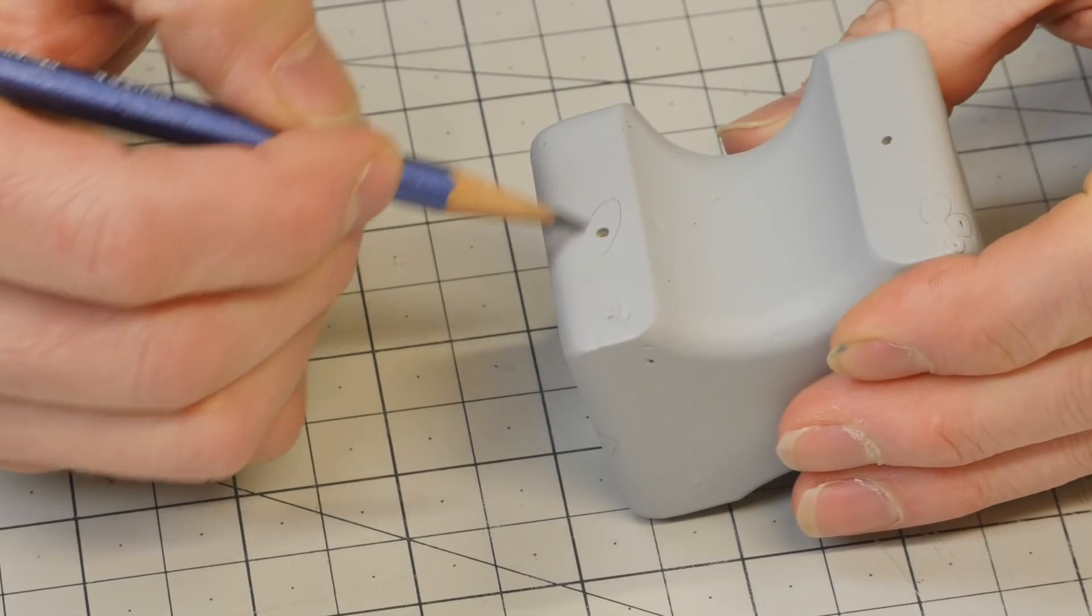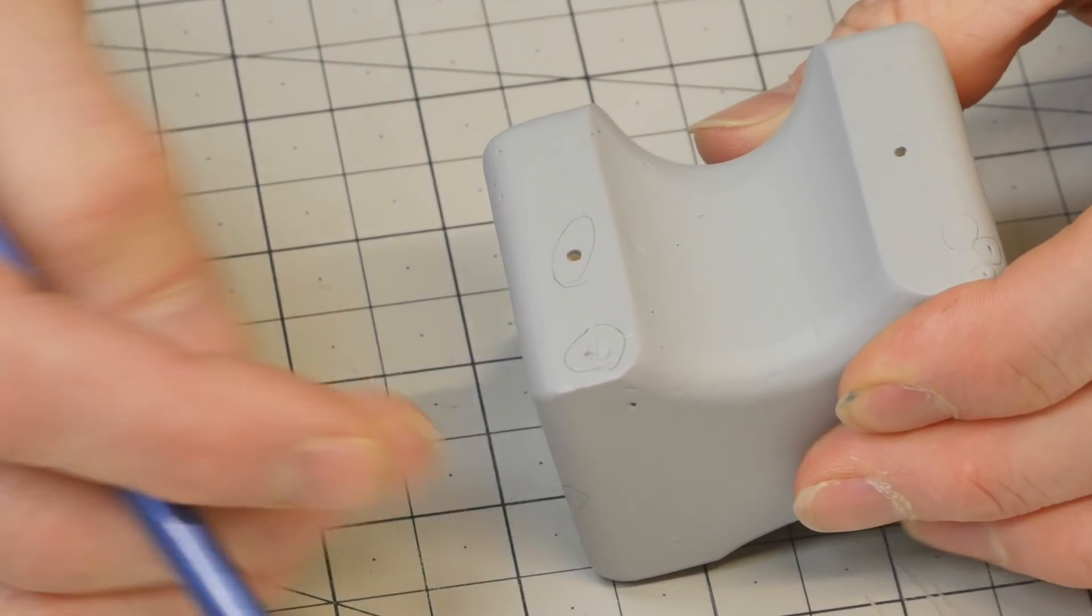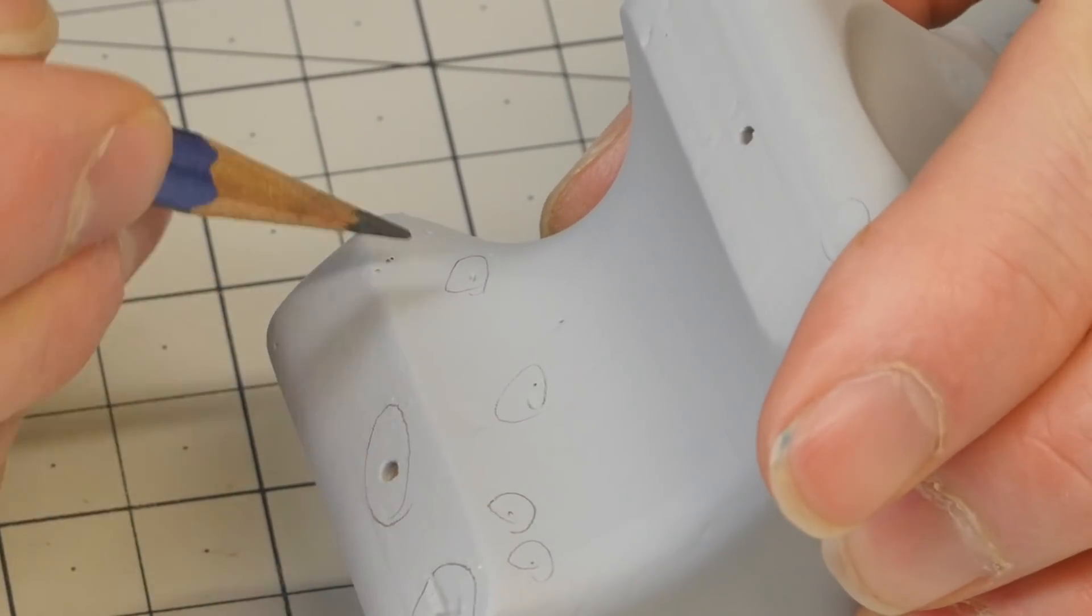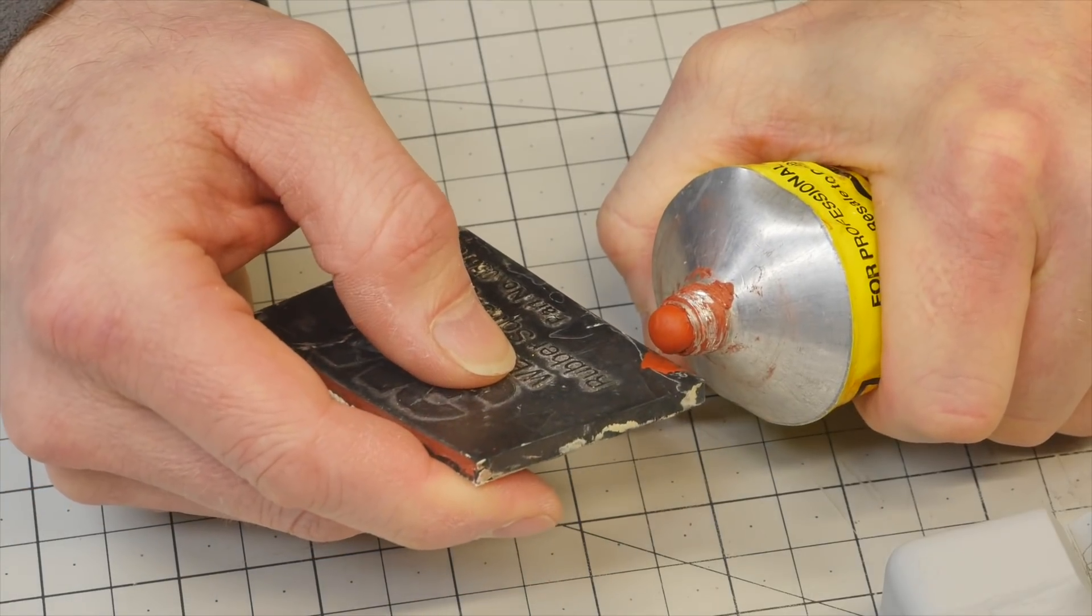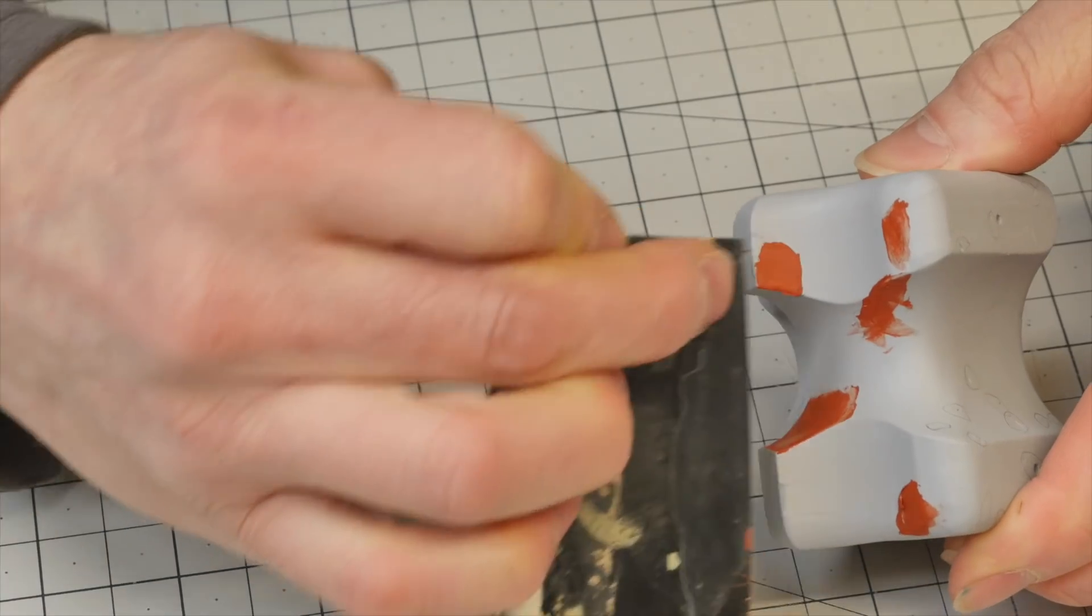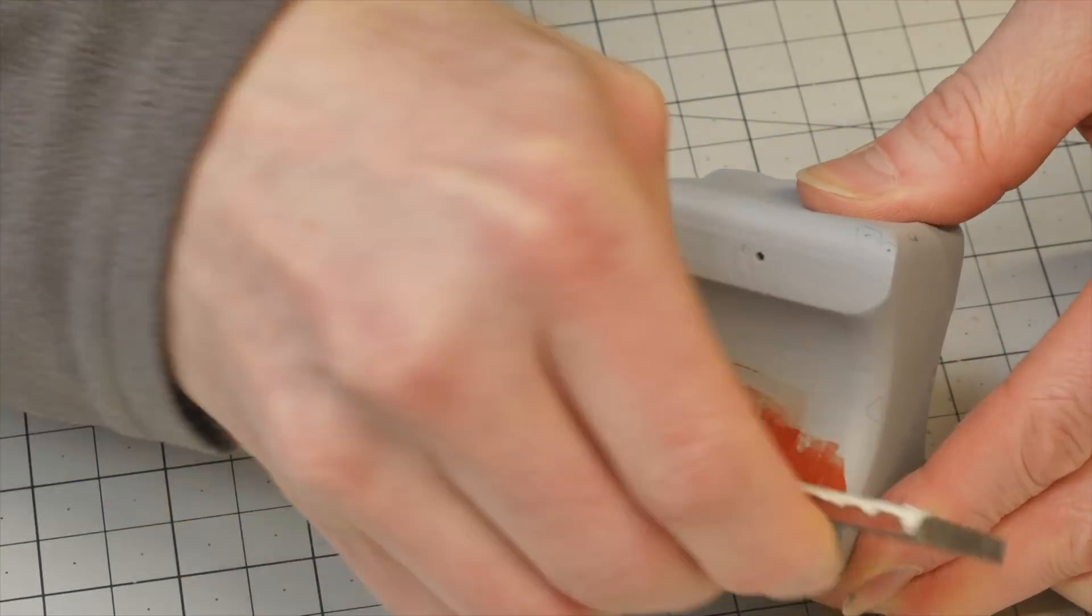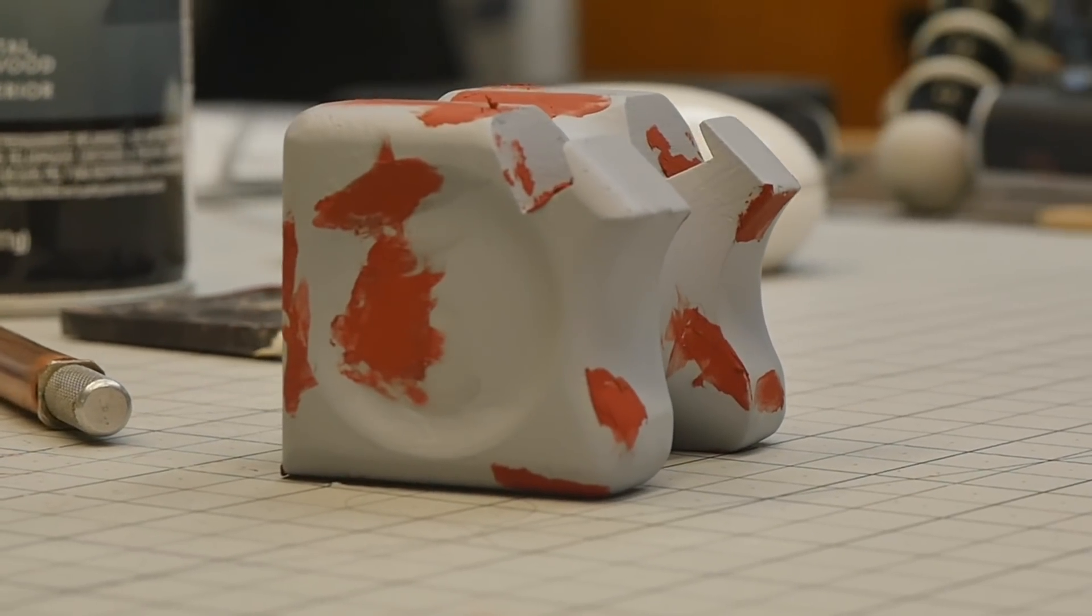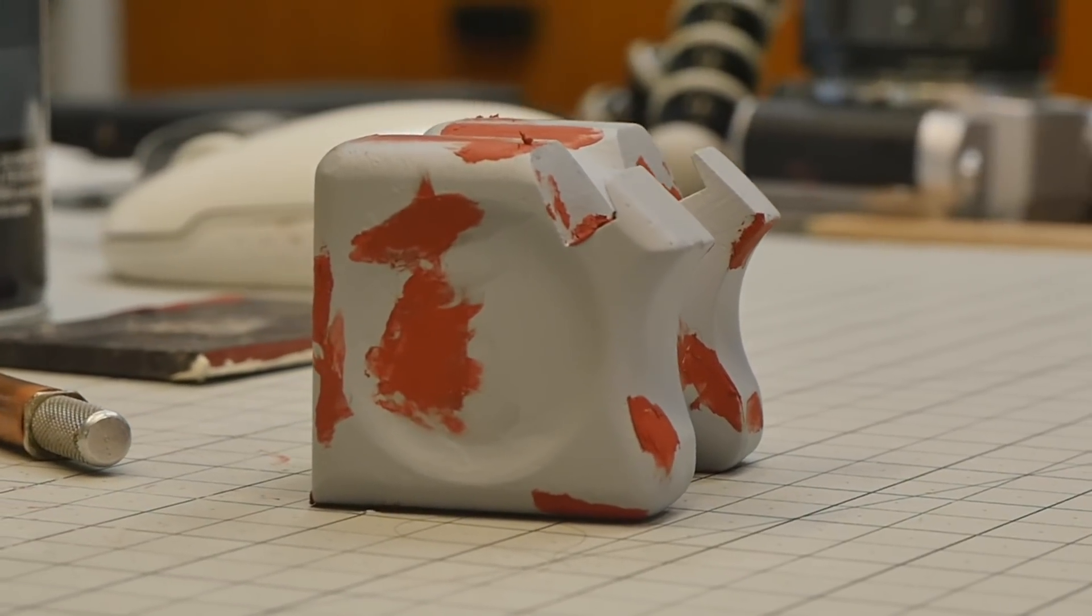Once we lay down the primer and it dries, after a few coats, we're going to go in and fill in any little pinholes and imperfections that we can find. We mark them with a pencil and move to our spot putty. I'm going to put this on with a little rubber squeegee. We're going to end up sanding off about 90% of all the spot putty we put on.